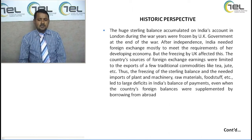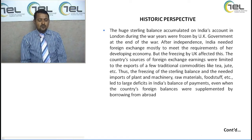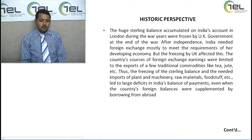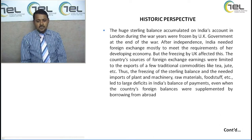The huge sterling balance accumulated on India's account in London during the war years was frozen by the UK government when the war ended in 1945. After independence, India needed foreign exchange mostly to meet the requirements of its developing economy — it wanted to invest large amounts of money in infrastructure. But the freezing by the UK affected the country's sources of foreign exchange earnings, which were limited to exports of a few traditional commodities like tea and jute.